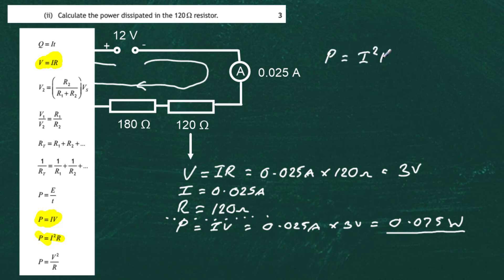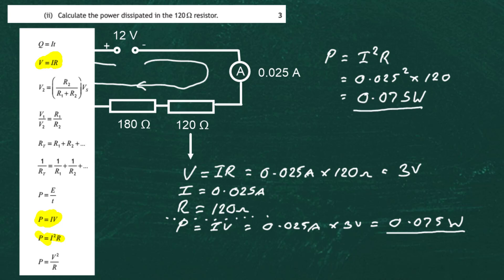Just to prove it works either way: P equals I squared times R, so we must be careful — it's 0.025 squared, multiplied by resistance 120 ohms. Doing that in the calculator gives the same answer of 0.075 watts. Likewise, we could use P equals V squared divided by R. The key thing is to mark down the list of key values for the component — potential difference, current, and resistance — and then you can work out the power using whichever power equation you have the data for.